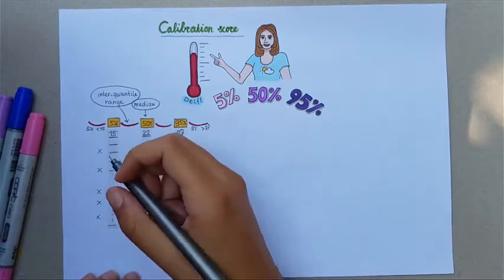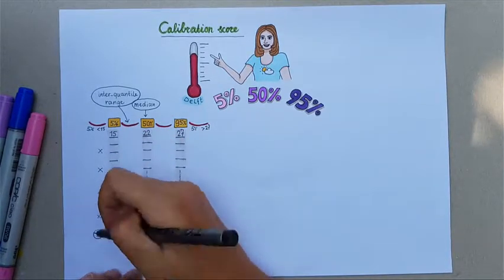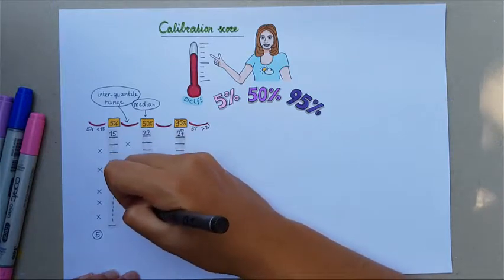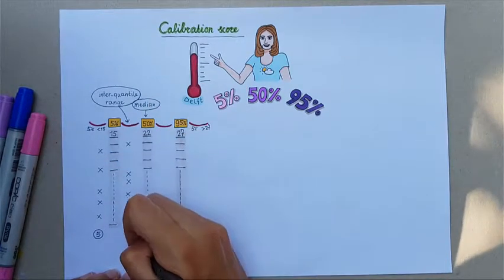We expect the expert to overshoot 5% of the time. Similarly, we expect the expert to undershoot 5% of the time, that is in five questions out of 100.